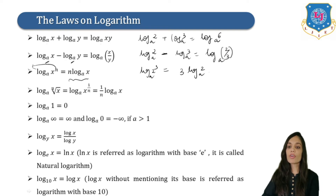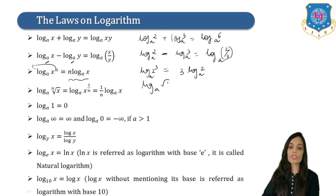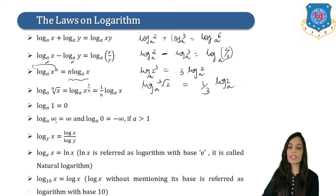Similarly, if we have the nth root of x, that is x raised to 1 upon n, then we can write this as — for example, if I write cube root of 2 — it can be written as 1 upon 3 log 2 to the base a.